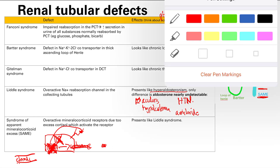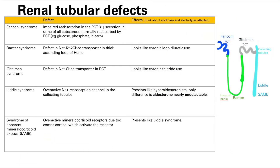To remember all these syndromes, think about them in order along the tubules. Fanconi is first. After that, the rest are in alphabetical order: Bartter (B), then Gitelman (G), then Liddle (L), then SAME (S). So remember: Fanconi is first, then the rest go in alphabetical order — Bartter, Gitelman, Liddle, and SAME syndrome.